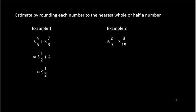Example 2: we have 6 and 2/9 minus 3 and 8/15. For 6 and 2/9, you want to determine if it's closer to 6, 6 and 1/2, or 7. This would be closer to 6, because half of 9 is 4.5. The 2 is closer to 0 than to 4.5, so this number is closer to 6.